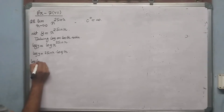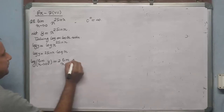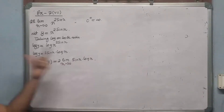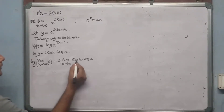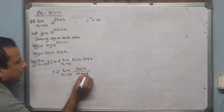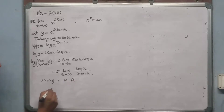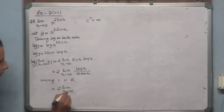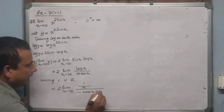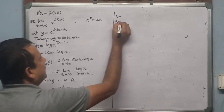Applying the limit: log(limit x→0 of y) = 2·limit x→0 of sin x·log x. To use L'Hospital's theorem, convert to numerator/denominator form: write log x over cosec x (since sin x = 1/cosec x). Applying L'Hospital's rule: derivative of log x is 1/x, and derivative of cosec x is −cosec x·cot x.